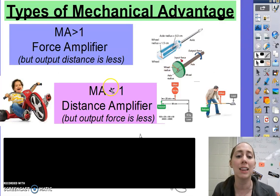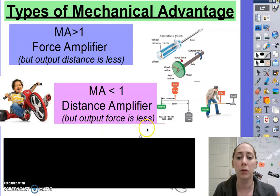If mechanical advantage is less than one, that's a distance amplifier. But the output force is less.